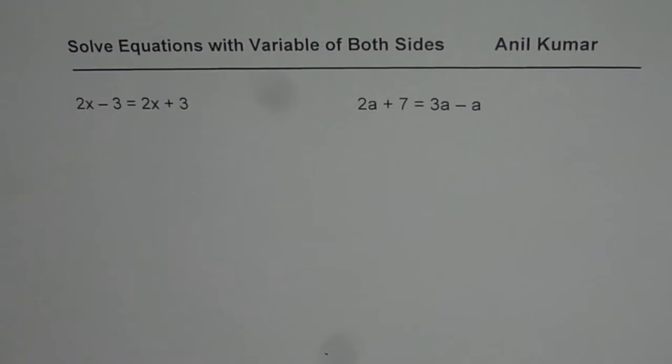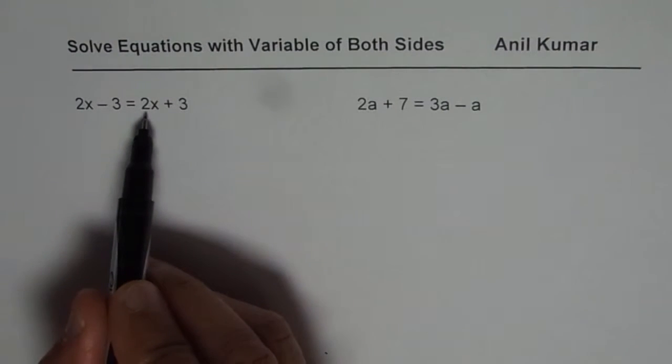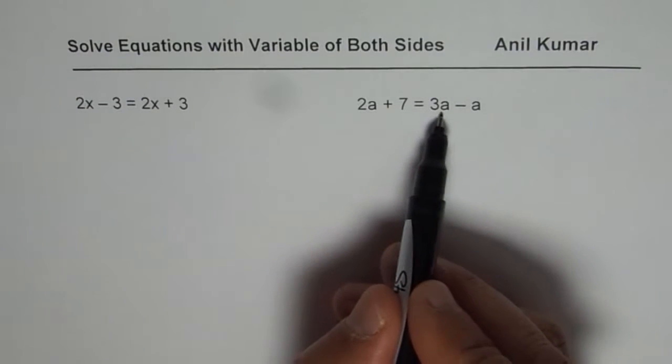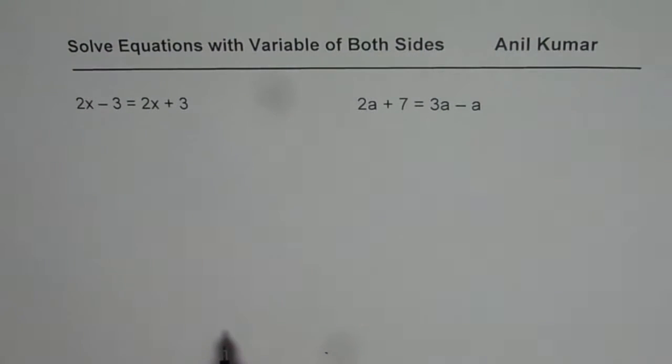I'd like you to pause the video, check for your solution and let me know what is interesting about these equations. The first one here is 2x minus 3 equals to 2x plus 3. The other one is 2a plus 7 equals to 3a minus a. Let us see how to solve them.